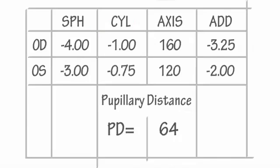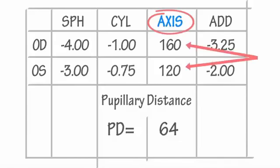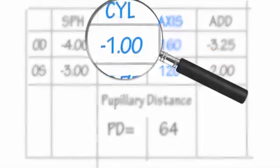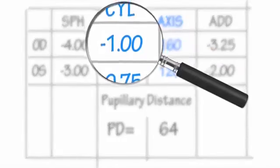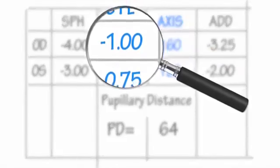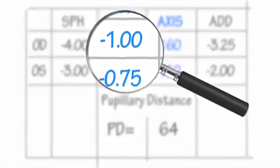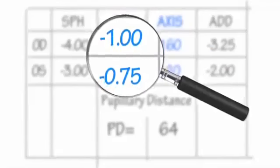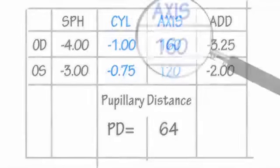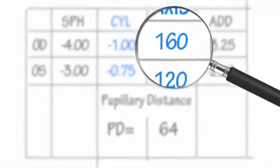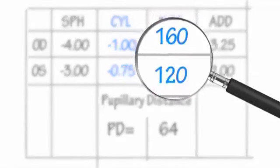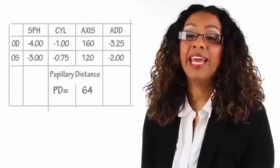You'll also see axis, which represents where the vision is blurred, from 1 to 180 degrees. So CYL equals the degree of the eye being shaped more like a football, and axis represents where the vision is blurred.